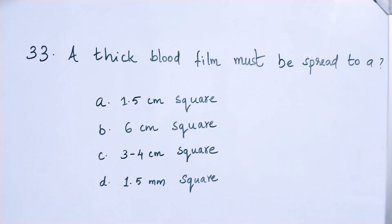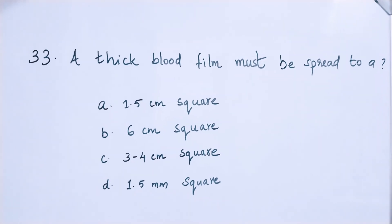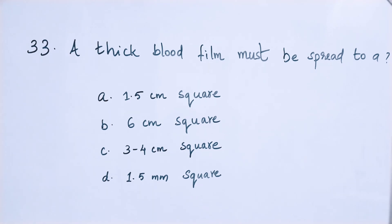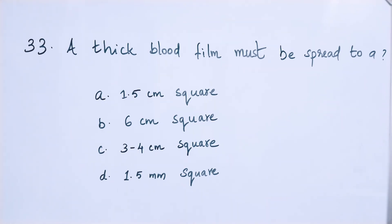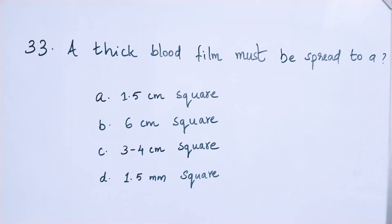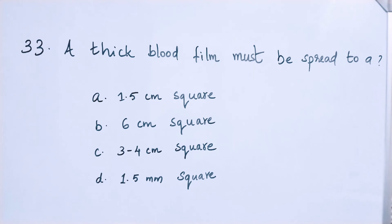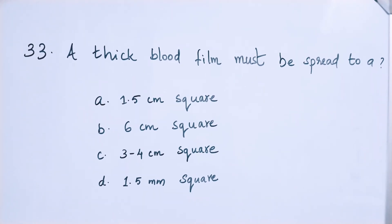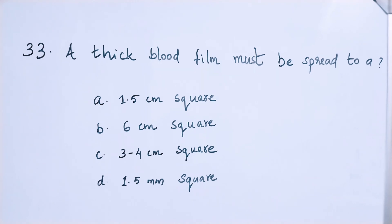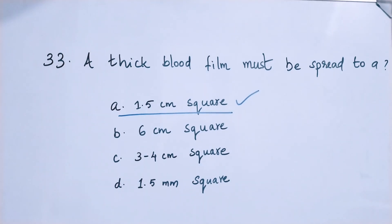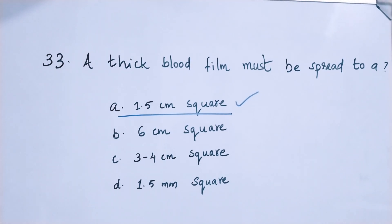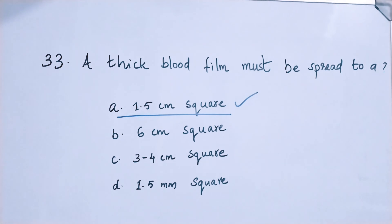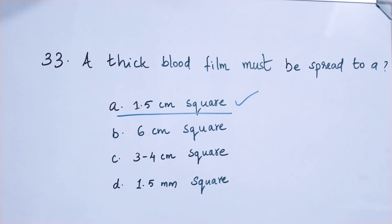Question number 33: A thick blood film must be spread to what diameter? Option A: 1.5 centimeter square, option B: 6 centimeter square, option C: 3 to 4 centimeter square, option D: 1.5 millimeter square. The right answer is option A — a thick blood film must be spread to 1.5 centimeter square.